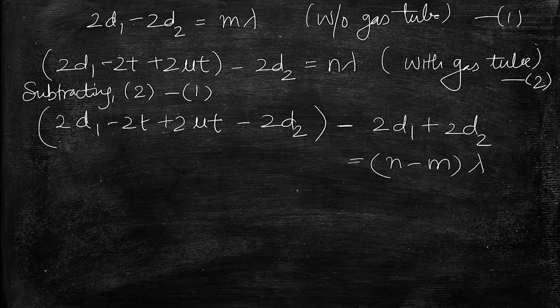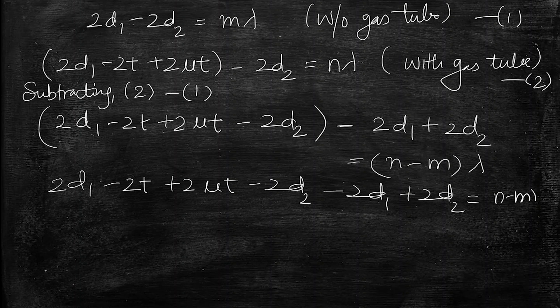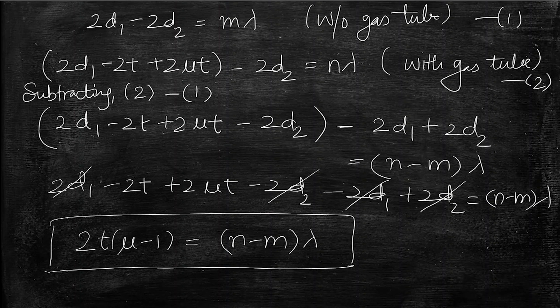So if we open these brackets, this will cancel out 2D1 with 2D1 and minus 2D2 with plus 2D2. So we are left with twice mu minus 1 into T which is equal to n minus m into lambda. So we will be using this formula to solve the second part, that is numerical part.